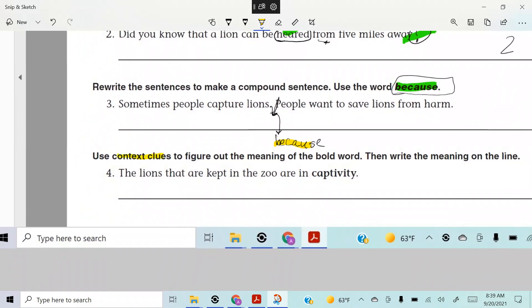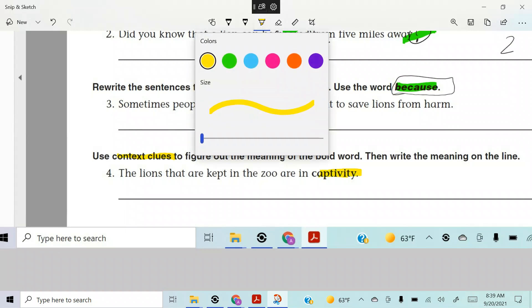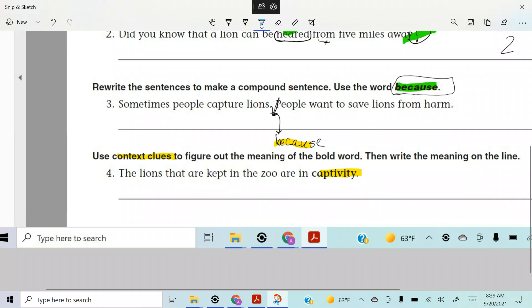All right. Use the context clues to figure out the meaning of the bold word. All right. So here's the bold word. Captivity. All right. Let's highlight some clues to what captivity means in the sentence. The lions that are kept in the zoo are in captivity.